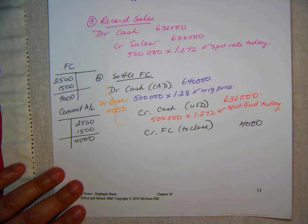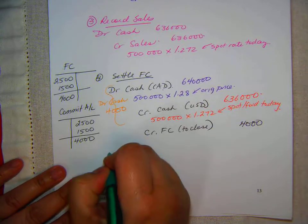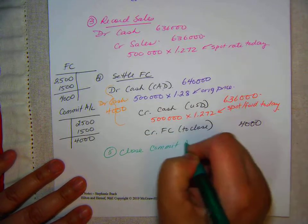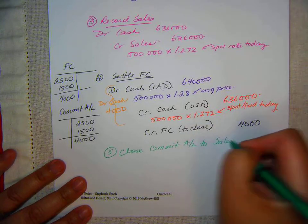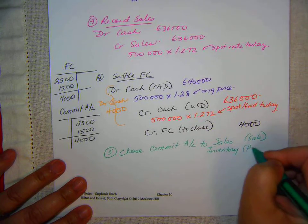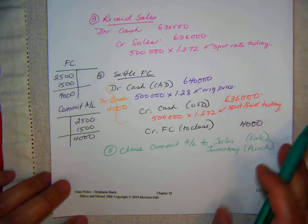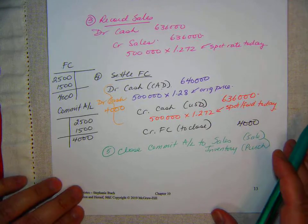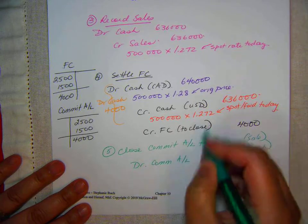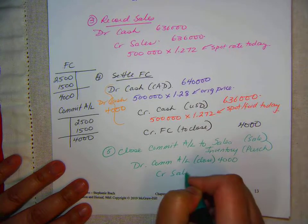Are we done or is there something we still need to do? We've got to close the commitment asset. Close commitment asset/liability to sales if it was a sale, or to inventory if it was a purchase — remember, you have to go look in the text and make sure you get the purchases right. So we're going to debit commitment asset/liability to close for 4,000 and credit sales for 4,000.